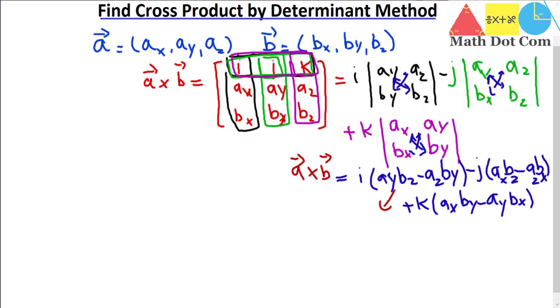It is clear that the i-component gives the resultant vector component cx, the j-component gives cy, and the k-component gives cz. Now let's take an example and apply this determinant method to get a clearer concept.